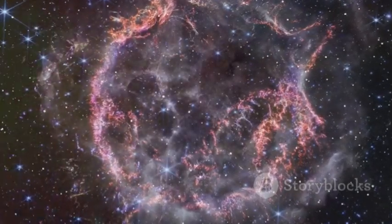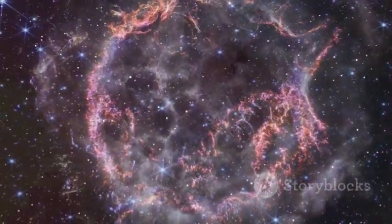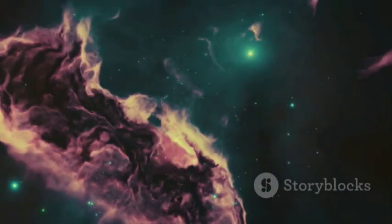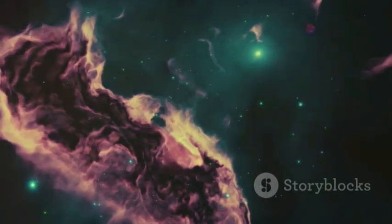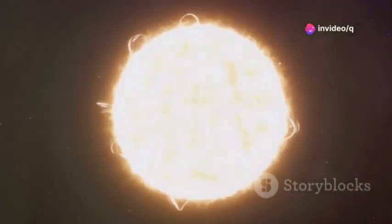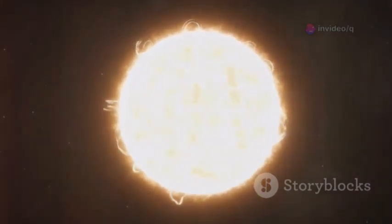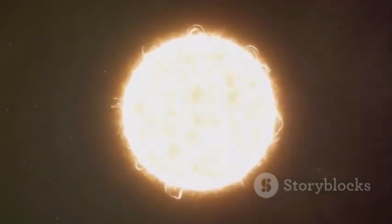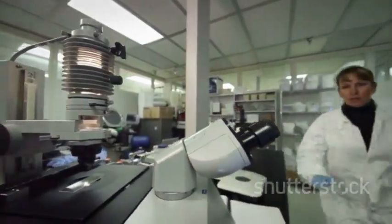For years, dark stars were a fringe idea thought unlikely to exist. The theory: in the early universe, dense clouds of dark matter could power giant, cool, and incredibly bright stars. These stars would be millions of times more massive than our sun, but much cooler on the surface. No one expected to find one, until now.